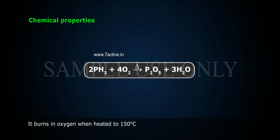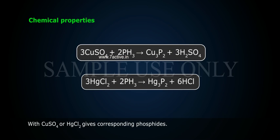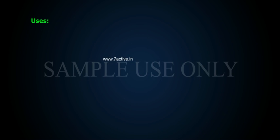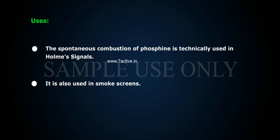It burns in oxygen when heated to 150 degrees centigrade. It gives phosphonium compounds with acids, and with copper sulfate or mercury chloride it gives corresponding phosphates. Uses: The spontaneous combustion of phosphine is technically used in home signals, and it is also used in smoke screens.